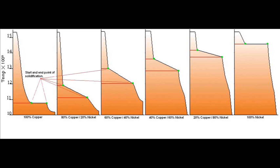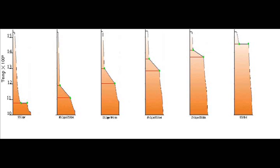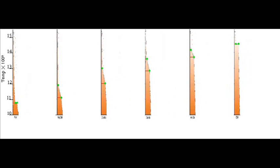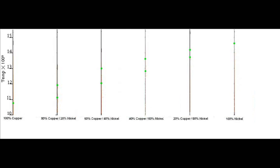Now I've highlighted with these green dots the start and end points of solidification, so we can see more clearly what's going on. Now that we have our cooling curve graphs all lined up, I'm just going to rotate them so we're looking edge on. And you can see we're left with a series of vertical lines denoting the different percentages where copper is decreasing and nickel is increasing. And I still have my green dots in there.